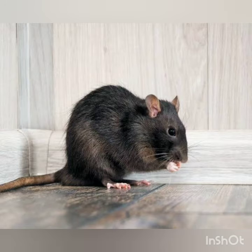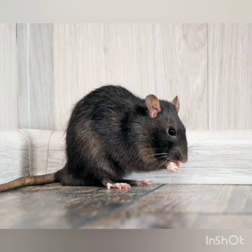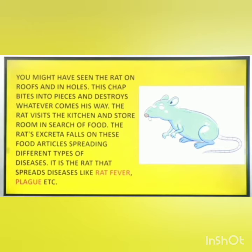Now tell — which animal is this? This is a rat. We can see rats on roofs or in holes. This creature will bite and destroy whatever comes its way. The rat visits the kitchen and storeroom in search of food. The rat's excreta falls on food articles, spreading different types of diseases. The rat spreads diseases like rat fever and plague.